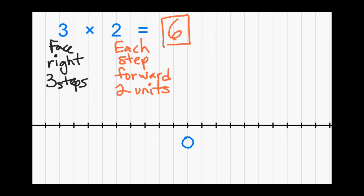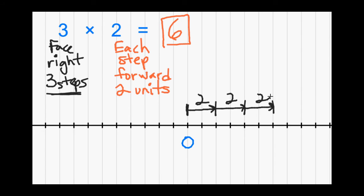Our answer is positive 6, so that's where we need to end up on our number line. We always start at zero. We face right toward the positives, and each step is two units long going forward. Step one, step two, step three — we end at 1, 2, 3, 4, 5, 6. We modeled three steps, each step two units long, going forward to reach positive 6.